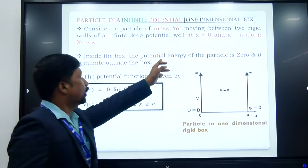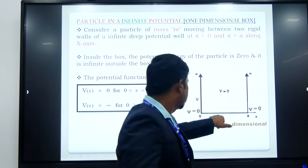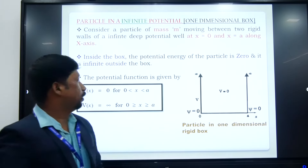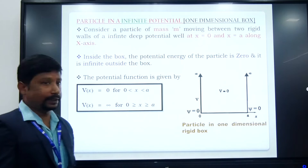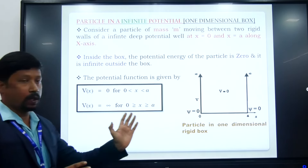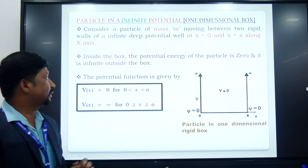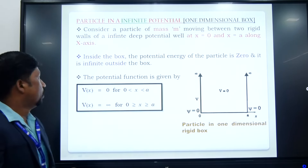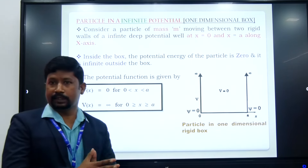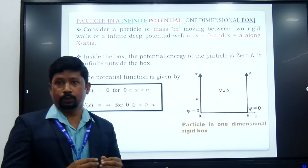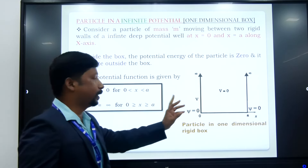Consider a particle of mass M that is moving between two rigid walls, that is, x is equal to 0 and x is equal to A along the x-axis. Inside the box, the potential energy is considered to be 0 and outside it is infinite.